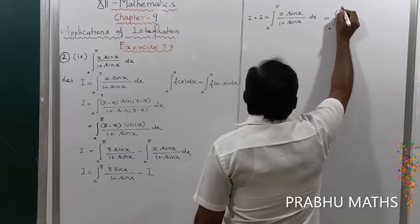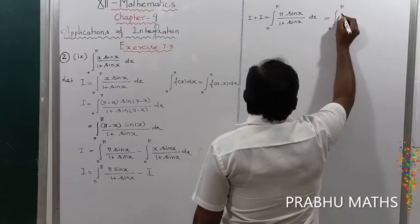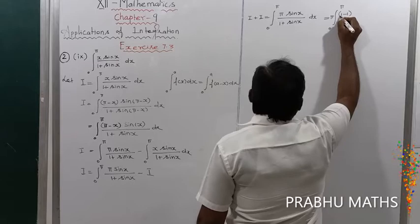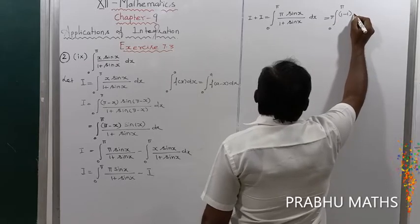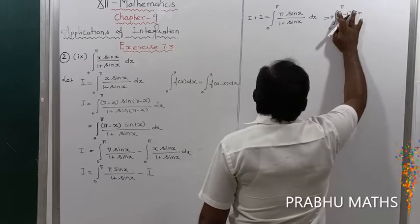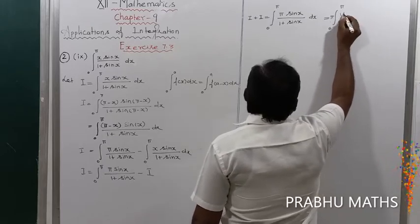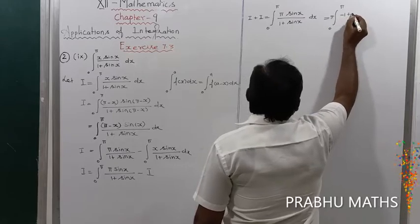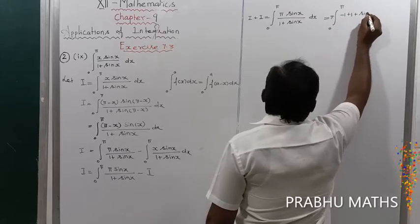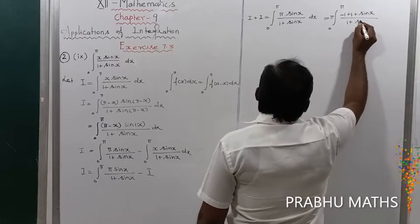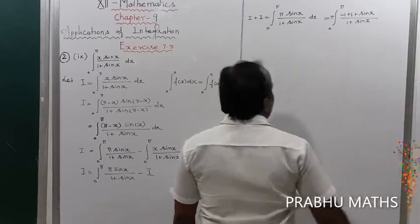Next, we manipulate the numerator. We write sin x as (1 plus sin x) minus 1, so the fraction sin x divided by (1 plus sin x) becomes (1 plus sin x minus 1) divided by (1 plus sin x), which is a small algebraic conversion.